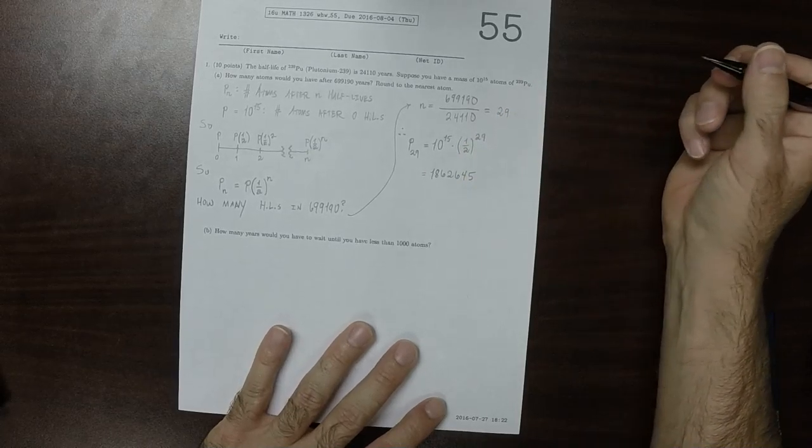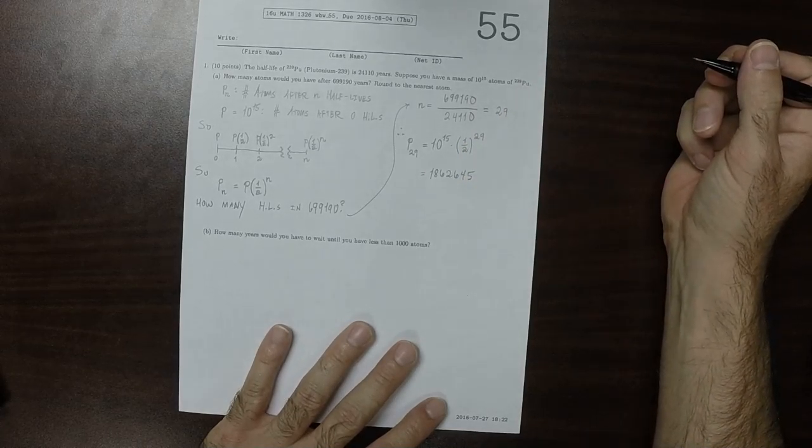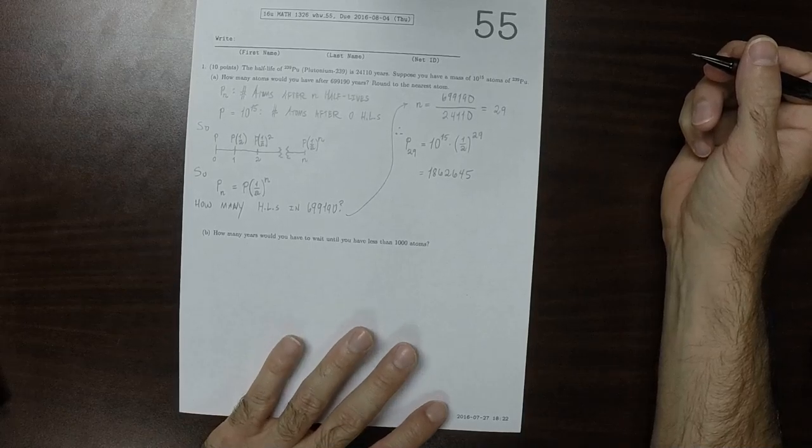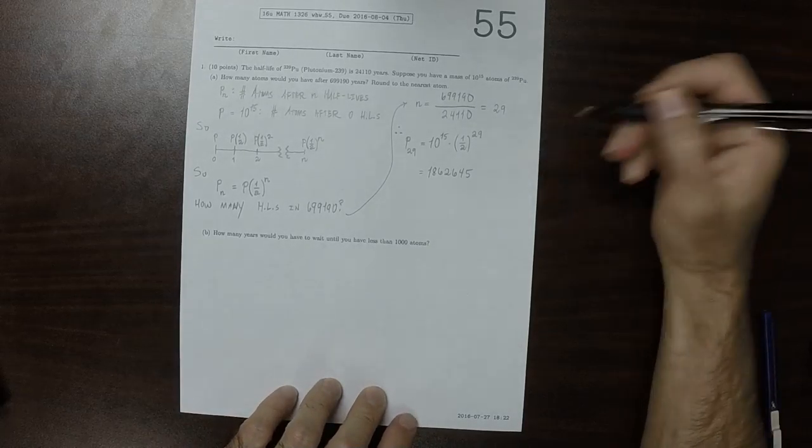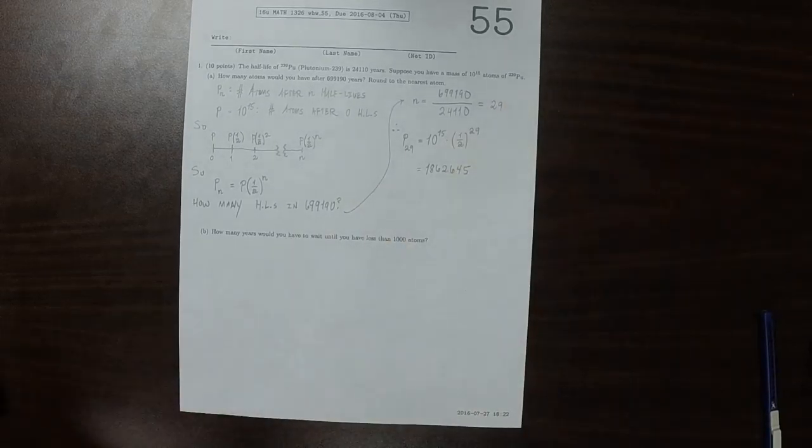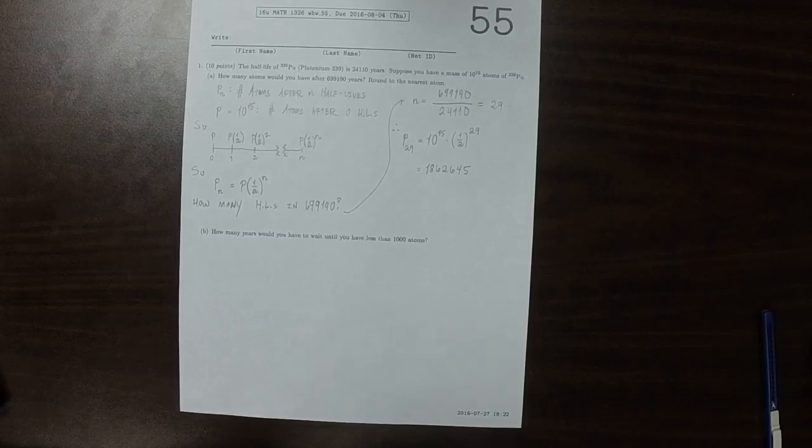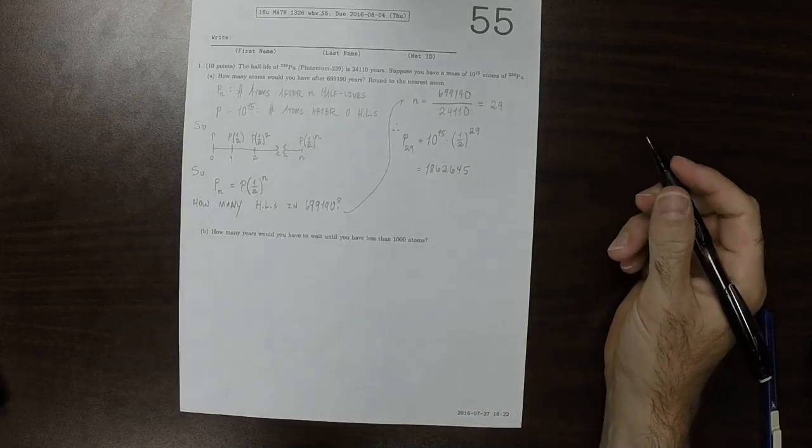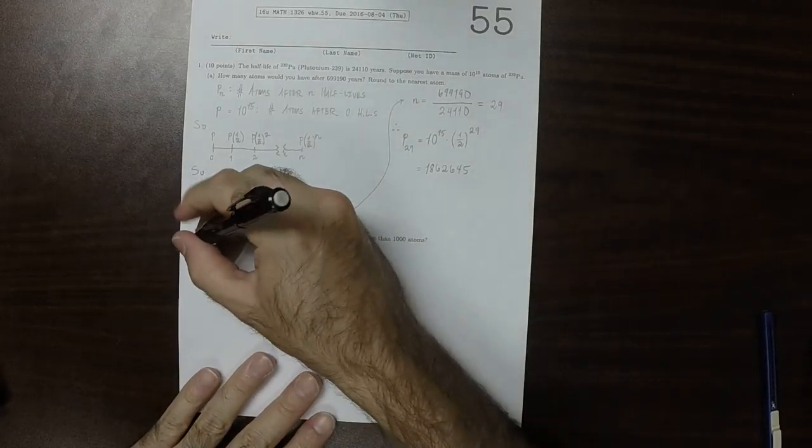And then round to the nearest atom. That gives 1,862,645. So not that many atoms in the grand scheme of things.